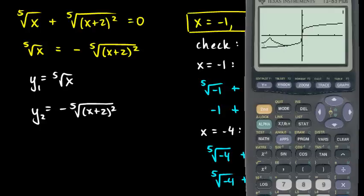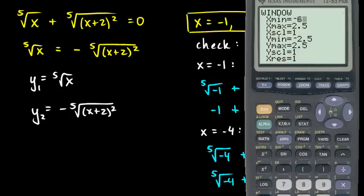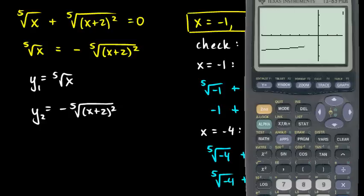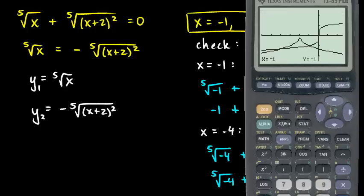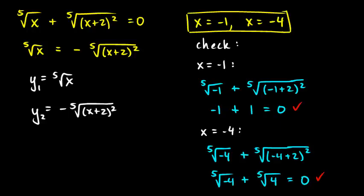Now let's graph that — it's a strange looking function with a little cusp. I'll change the window so x minimum is negative six. You can see the two curves cross right there at x equals negative 1, and they also cross over here. Using trace, you can verify the intersections at negative 1 and negative 4. So y1 equals y2 at those two places, and those are our solutions.